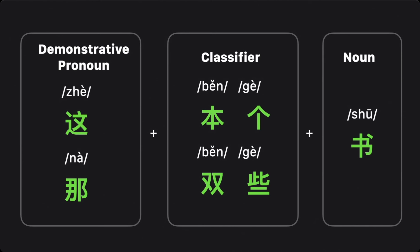In this lesson, we're going to put those together and generalize this pattern. First, we have a demonstrative pronoun — 这 or 那 — then we have a classifier, for example 个, 本, or 双, followed by a noun. That is how you can express things like 'this book,' 'these books,' or 'those books' in Chinese.